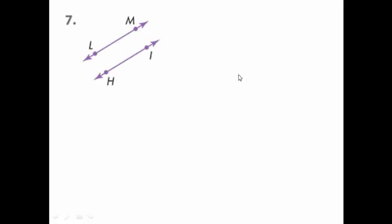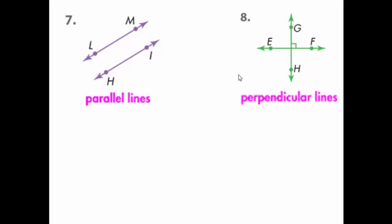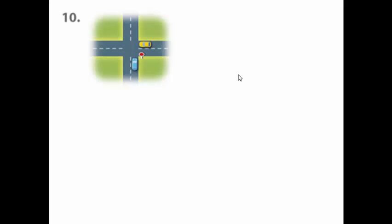We have another easy question: what is the relation between these two lines? The answer is parallel lines. What is the relation here? Perfect — perpendicular lines. Another question: what is this? It's a point. For question 10, what is the relation between these two rows if we imagine them as two lines? Perpendicular — all these corners are right angles.